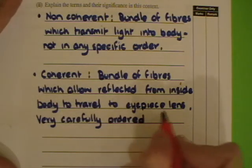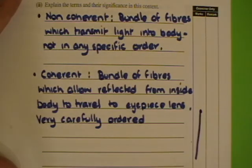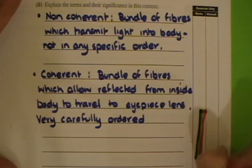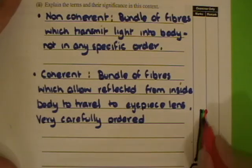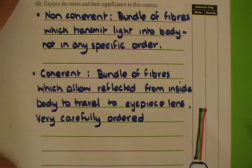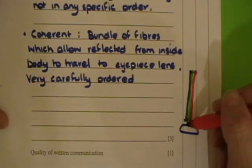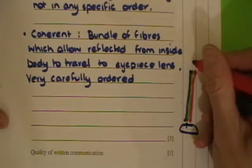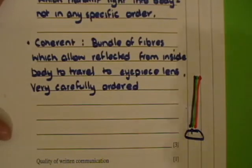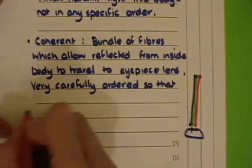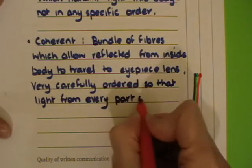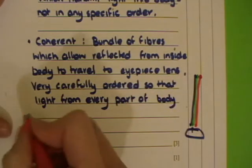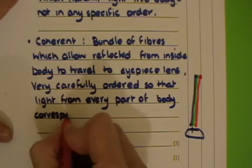What 'carefully ordered' means is that the light coming into each fiber is coming out in the same order that it went in. So if you have light coming from a body part, the light traveling along that fiber ends up directly corresponding to that part of the body being looked at. Everything is in perfect order. So light from every part of the body corresponds to the same position on the image.